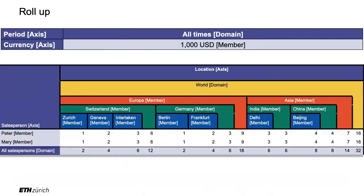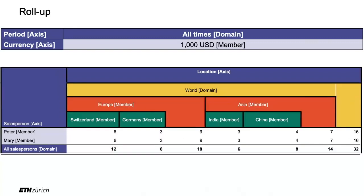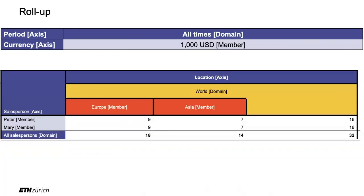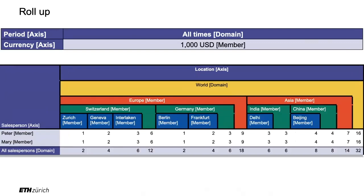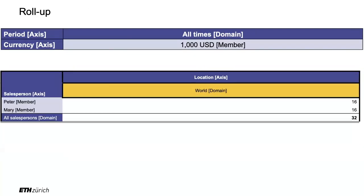As a cliffhanger before the break: the operation called roll up. In an interactive interface, if I don't want cities, I roll up one level — click, cities disappear. If I don't want countries, just continents — roll up again. Roll up to the whole world. The opposite direction is called drilling down — drilling into more details. So: drill down for more detail, roll up to remove detail. See you in 15 minutes.